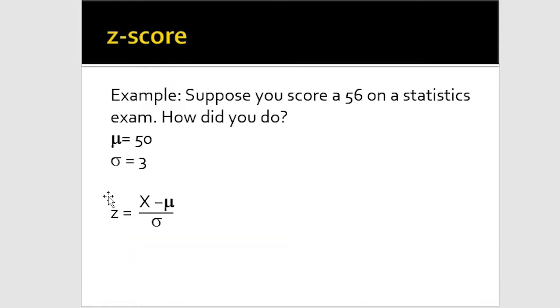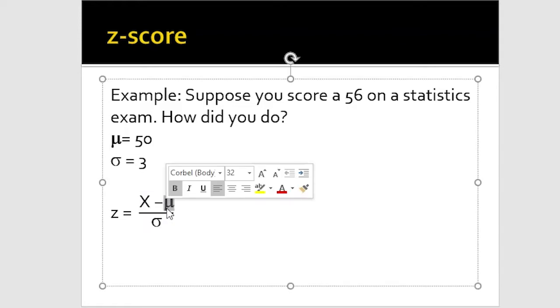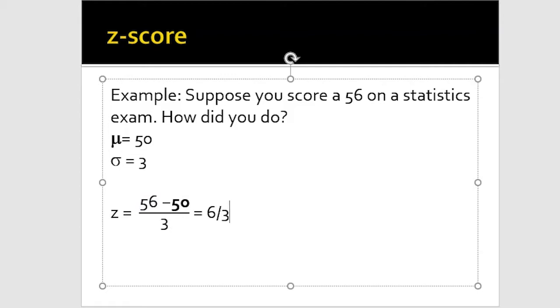Let's go through an example. Suppose you score a 56 on a statistics exam, how did you do? What you need to know is the population mean and the population standard deviation. For this, that would just be the students who were in that statistics class who also took the exam. The population mean is 50, population standard deviation is 3. So we put that information in: 56 minus 50, divided by 3, which equals 6 divided by 3, which equals 2. They got a z-score of 2 on this particular exam. A z-score of 2 means they scored two standard deviation units above the mean. This would actually be a high score, and because it's a positive number, that means they scored above the mean.